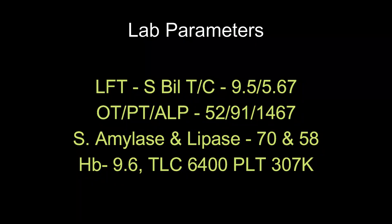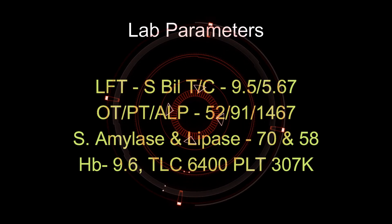The routine workup revealed serum bilirubin total 9.5 and conjugated 5.67 — that is the obstructive pattern, where conjugated bilirubin is more than 15% of total. Her AST/ALT were normal but alkaline phosphatase was markedly raised at 1,467. Serum amylase and lipase were normal. Her hemoglobin was on the lower side at 9.6, total leukocyte count was 6,400, and platelet count 3,70,000.